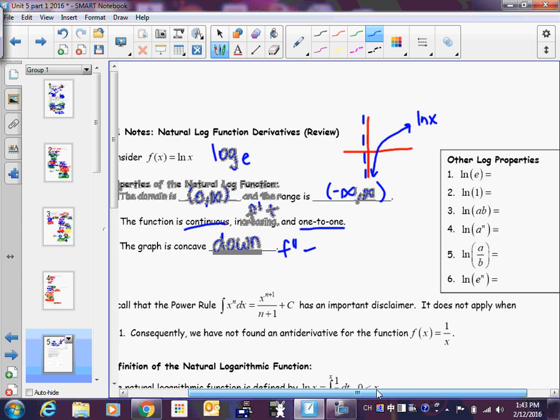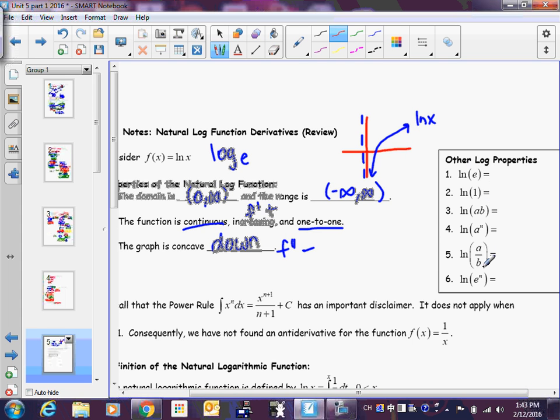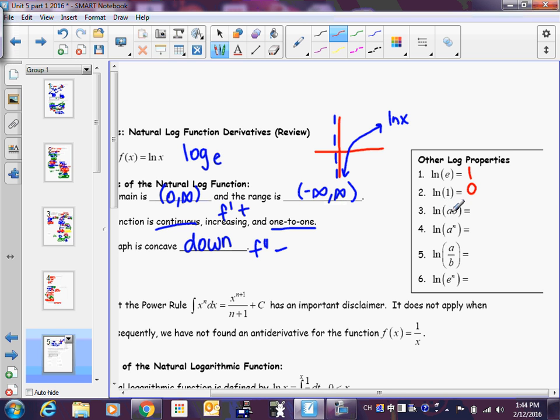All right, over here we have some log properties. The whole reason we need to review these is so that we can use them to make certain problems easier. Certain problems could be really difficult, but if you apply a log property, it gets so much easier. So, if you know it, shout it out. Anybody know what natural log of e is? One. What about natural log of one? Hint, it is not e. Zero. Does anybody remember how to expand a log? Log a plus log b. And if you're like, why are we not multiplying? Why are we adding? It's for the same reason that when you are multiplying exponents, like x squared times x cubed, you add those exponents.